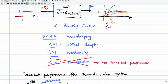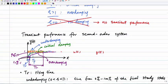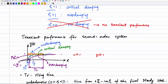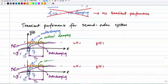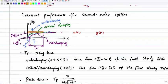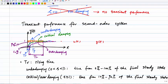Let's talk about the transient performance metrics for second-order systems. I'll replot this a bit larger. For the transient performance of a second-order system, we have a number of factors used to quantify it. The first one is called rise time. This is the first metric used to quantify the transient performance for a second-order system.